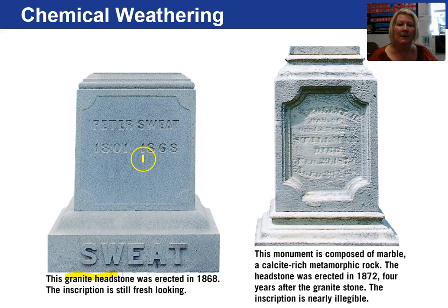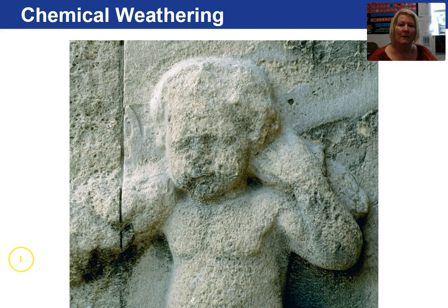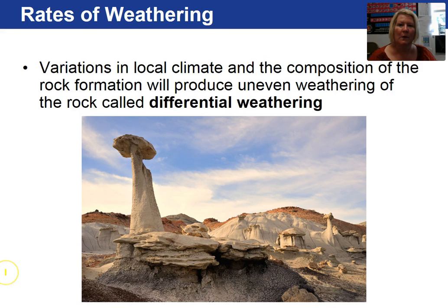Granite, because it has so much quartz in it which is stable at the earth's surface, tends not to weather as quickly as a calcite-rich monument — in this case marble. This is another image showing chemical weathering due to rock type. When we talk about differential weathering, that refers to the preferential weathering of one rock formation over another, which depends upon the climate as well as the composition of the rock.